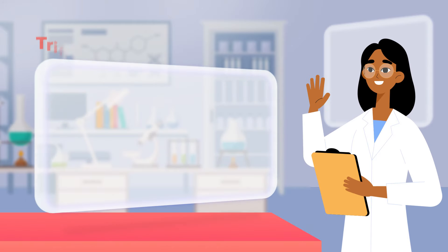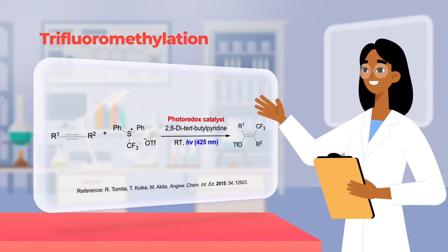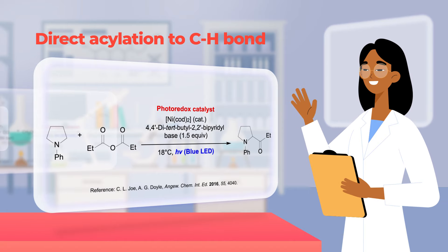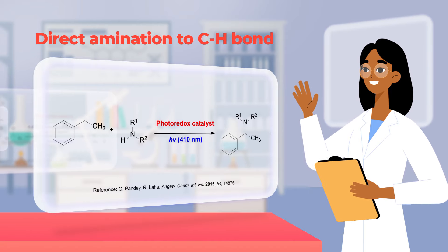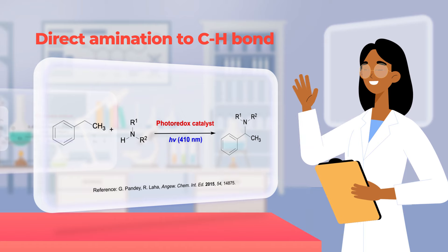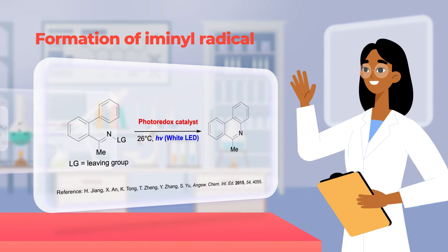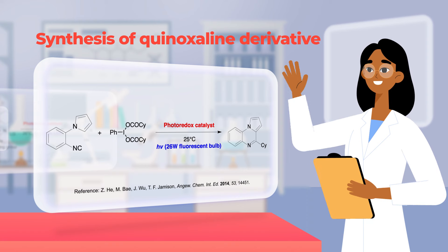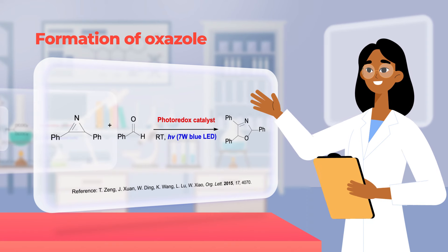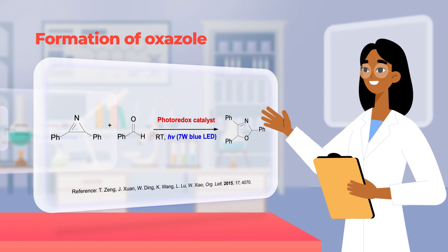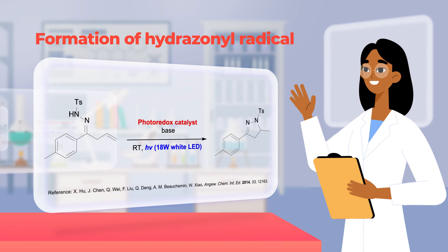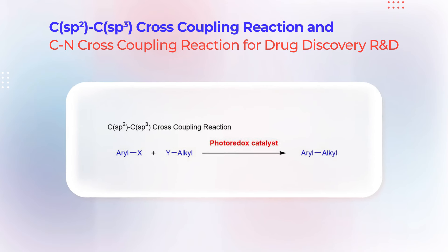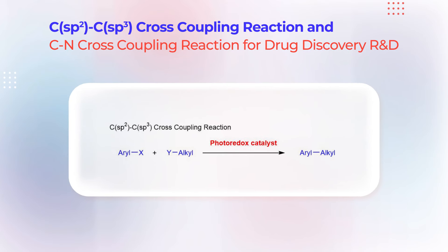Visible light photoredox catalysts mediate reactions such as trifluoromethylation, carbonylation, direct acylation to C–H bond, direct amination to C–H bond, formation of iminyl radical, synthesis of quinoxaline derivatives, formation of oxazole by 3+2 cycloaddition, and formation of hydrazonyl radical.